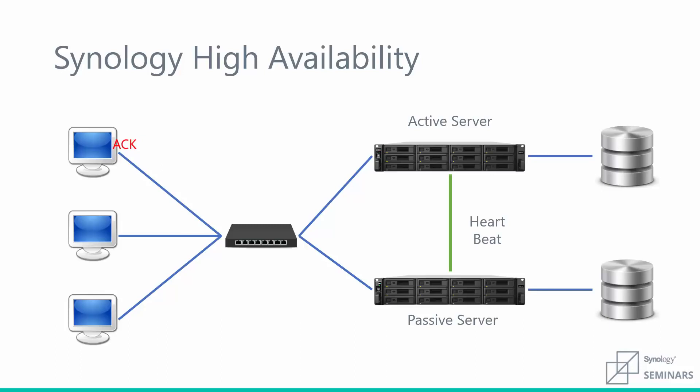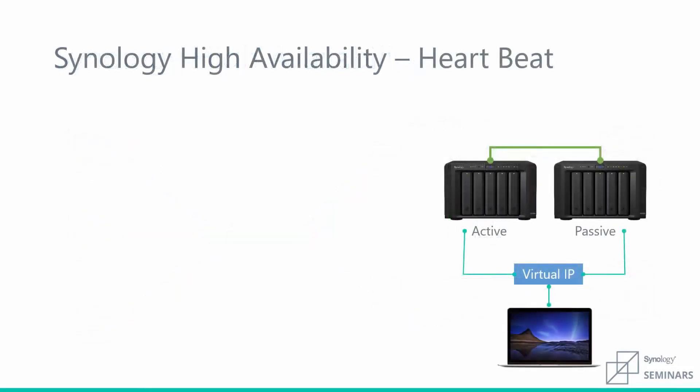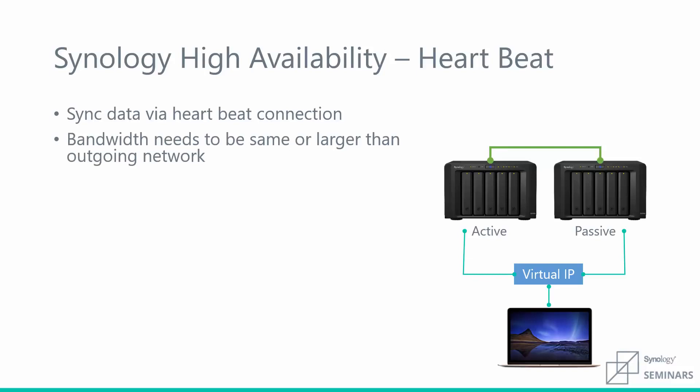We're looking at this because of the heartbeat connection and how critical it is to performance. The heartbeat in this diagram is represented by the green line — that's the cable or connection between those two servers. This is how we keep data synced between the two devices. An important consideration is that the speed or bandwidth of that heartbeat connection needs to be the same or larger than the speed of your network. So for example, if you have 10 gig in your environment, that heartbeat needs to be 10 gig at a minimum.